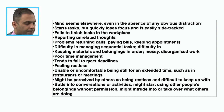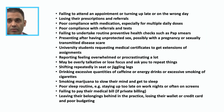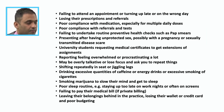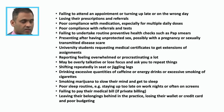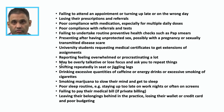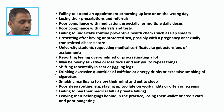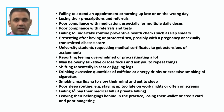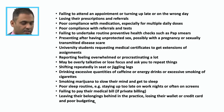Individuals might also leave things to the last minute; failing to attend an appointment; turning up on the wrong day; losing prescriptions and referrals; poor compliance with medications, particularly for multiple daily doses; poor compliance with referrals and tests; failure to undertake routine preventative health checks such as pap smears; presenting after having unprotected sex with possible pregnancy or STI scare. University students requesting medical certificates to get extensions on assignments; reporting feeling overwhelmed or procrastinating; maybe overly talkative; drinking excessive quantities of caffeine, energy drinks, or smoking cannabis and cigarettes to slow their mind and get to sleep. Poor sleep routine — circadian rhythm dysfunction tends to be very prominent.